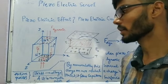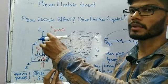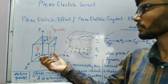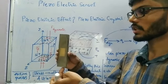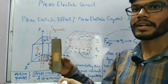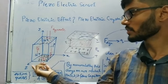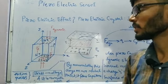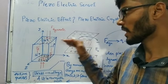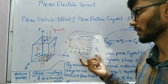If we apply a dynamic force on the crystal — from top and bottom, or by vibrating it — it will experience dynamic force. Due to this dynamic force, the opposite faces of the crystal on which we are sensing the vibration will generate different polarity charges at those opposite faces. The bottom face generates positive charges and the top face accumulates negative charges. By accumulating these charges on metal plates, we form a capacitor.